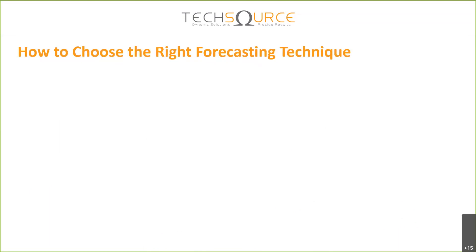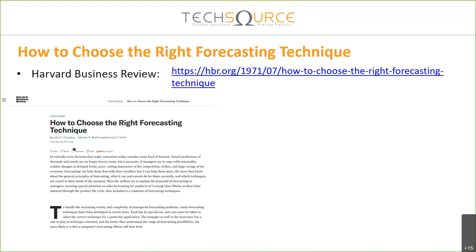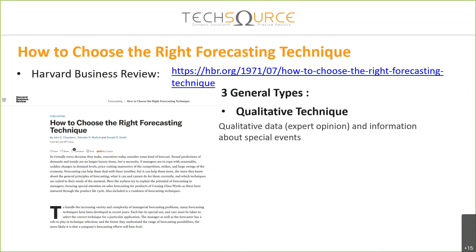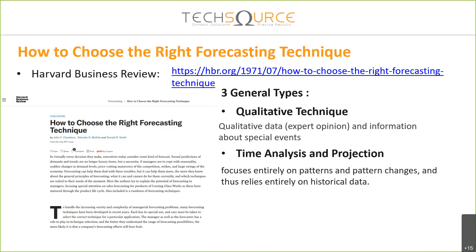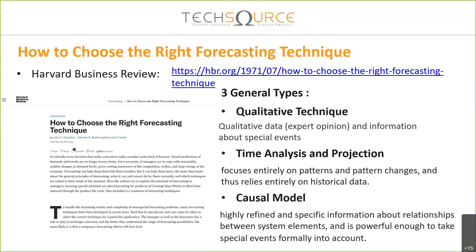Before looking into our case today, I'd like to share an article from Harvard Business Review that summarizes forecasting techniques into three types. First, qualitative technique, which needs qualitative data or expert opinion and information about special events. Second, time analysis and projection, which focuses entirely on patterns and pattern changes. Third, it relies entirely on historical data. And last, the causal model uses highly refined and specific information about the relationship between system elements and can formally account for special events. These differences imply that the same type of forecasting technique is not appropriate for forecasting the trend of a stock.